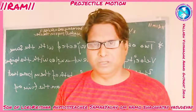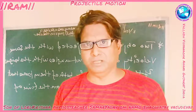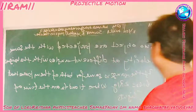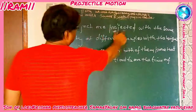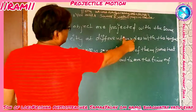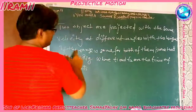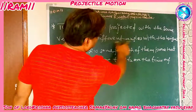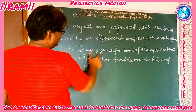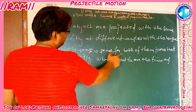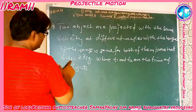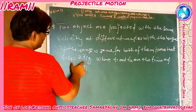Today in physics, we will see one numerical based on motion in a plane. The numerical is like this: two objects are projected with the same velocity at different angles with the horizontal. If the range of both of them are the same, then we will prove that T1 into T2 is equal to 2R upon G.